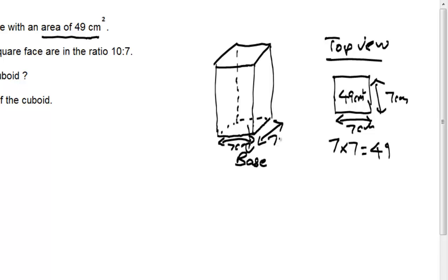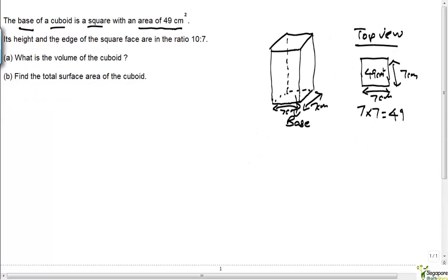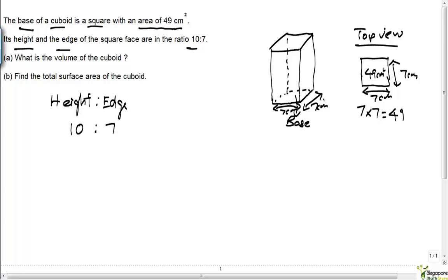We are told that the height and the edge of the square face are in the ratio of 10 to 7. So the height to the edge of the square face is 10 to 7. The edge of the square face is 7 centimeters, so this 7 units here is equal to 7 centimeters.